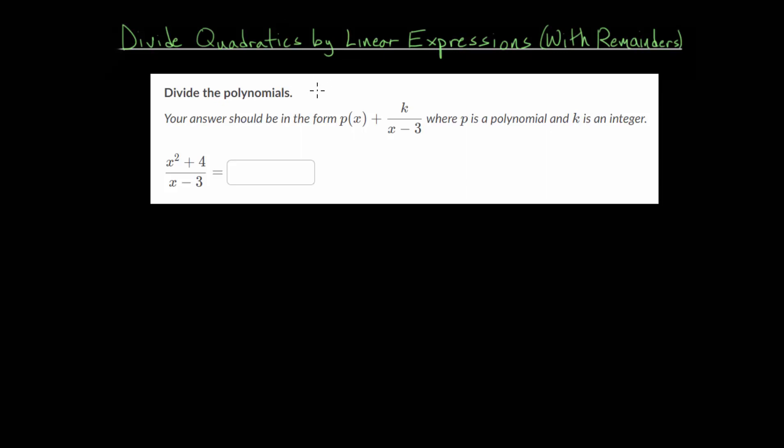To solve problems like these, where we divide a quadratic by some linear expression, we're going to end up with a polynomial p(x) plus some remainder term, where k is an integer divided by the linear factor we're originally dividing by. The way to approach these problems is to use a technique known as polynomial long division.